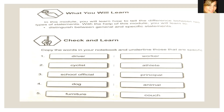Now let's take the example in check and learn. We have two columns in each number. The direction says copy the words in your answer sheet and underline those that are specific. Look at your answer sheets — we have there English Quarter 3, Q3 M3 answer sheets. Don't forget to write your name. This is where you will put your answer.